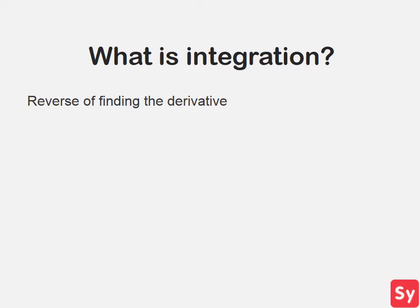So what do I mean by integration is the reverse of finding the derivative? Well, here we have 2x. When we take the derivative, we get 2. So the reverse of taking the derivative means we are given 2.